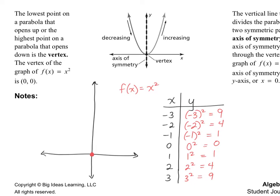We can go ahead and graph the other points. When you graph that, you end up with this beautiful U shape. The axis of symmetry is the y-axis and the vertex is at the origin. This is the very most basic parabola graph — just plain old x squared — and everything else we do is going to be compared to that x squared.